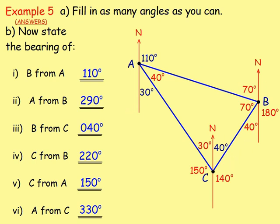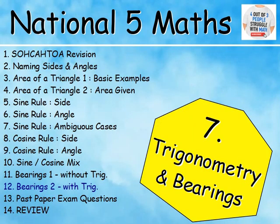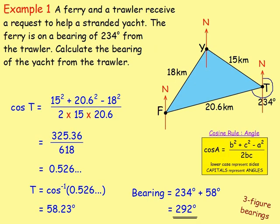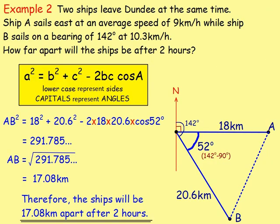To finish off, we looked at bearings but also applying trigonometry to those questions. With the ferry and trawler question, it's to do with bearings and we're given a triangle, but we had to use the cosine rule to work out the size of one of the missing angles and then use our knowledge about bearings to work out the final answer. With another example, we drew out what the bearings looked like, used the information, and again applied the cosine rule.